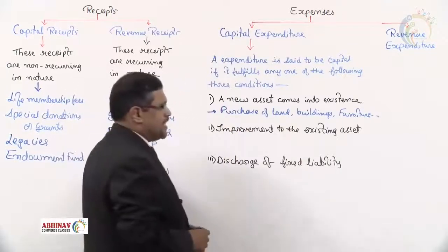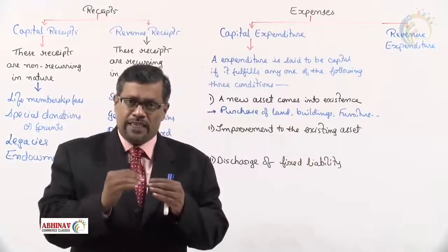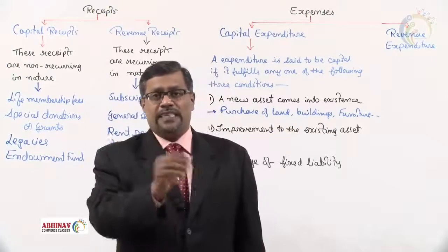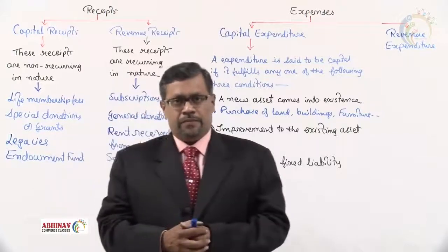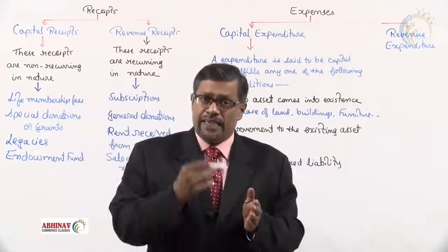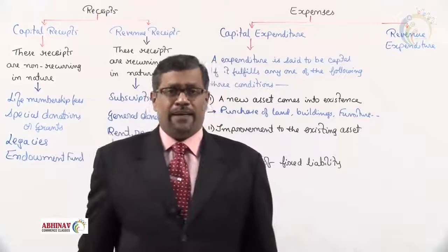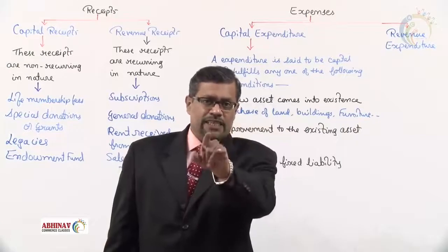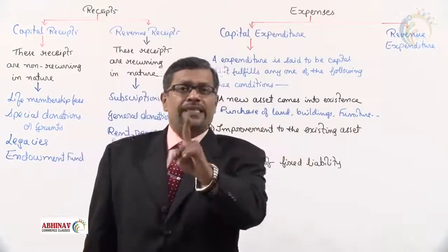The second condition is improvement to the existing asset. Improvement means doing something to the asset such that the value of the asset increases — not maintenance. For example, if you give your bike for servicing, and over five years you spend 1,000 rupees every year on servicing, you cannot claim that amount when selling the bike. Servicing is done not to improve the bike but to maintain it in good condition.